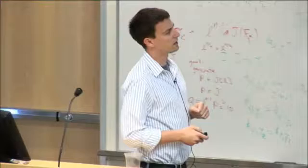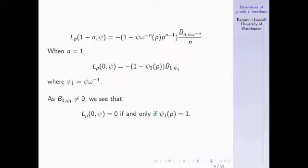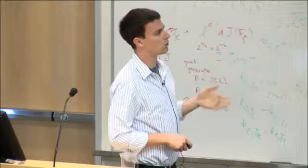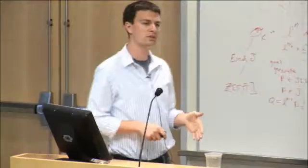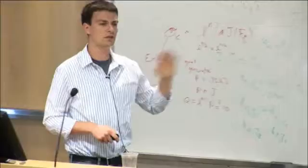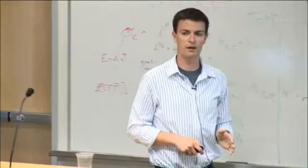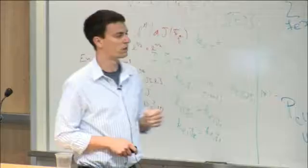So ψ₁(p) is something you can easily compute if you know ψ. This is a very special class of character, and we have this zero if and only if condition. Now, if you have a function that vanishes at 0, your next question should be: what's the order of the zero? Does it vanish once, twice, or to higher order?